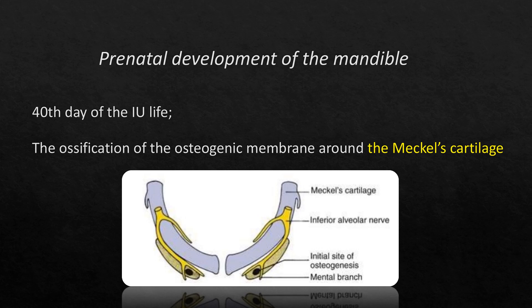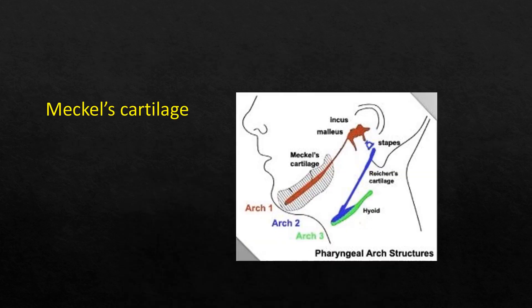Now let's discuss the prenatal development of the mandible. Meckel's cartilage is a solid hyaline cartilage surrounded by a fibrocellular capsule. It extends from the otic capsule to the mandible midline. There are two Meckel's cartilage pieces that do not meet at the midline — they remain separated by a thin band of mesenchyme. This cartilage only takes the role of a guide for ossification and is not incorporated into the mandible during ossification. It forms the auditory ossicles and the sphenomandibular ligament. Additionally, the fibrocellular capsule persists as the sphenomandibular ligament.